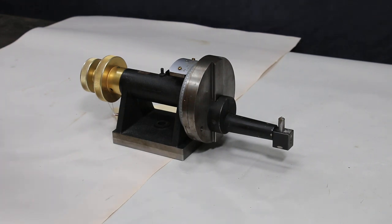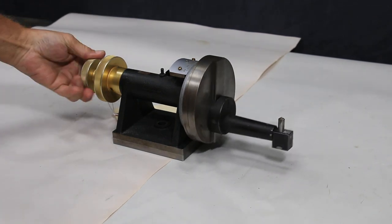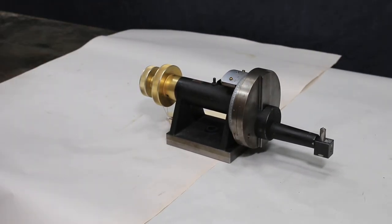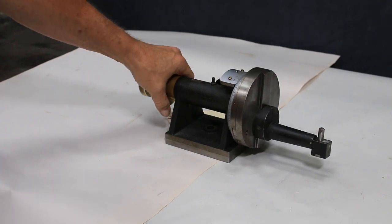So today we're going to show you a nifty little item we have here on the table and you might say, what is this thing? Well, this is a radius dresser. This is a universal radius dresser, mainly used for a surface grinder.